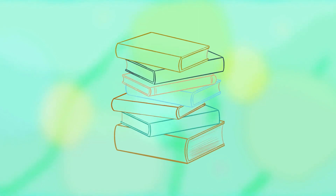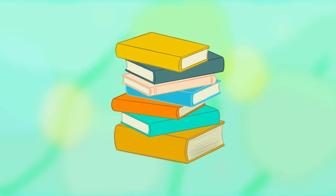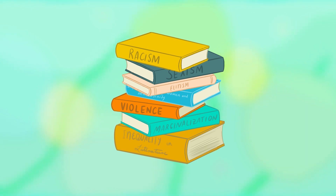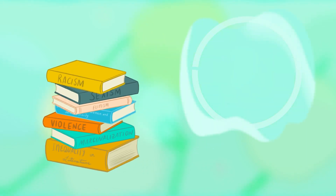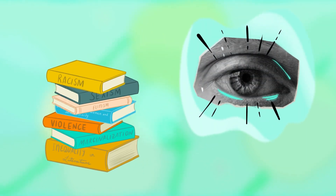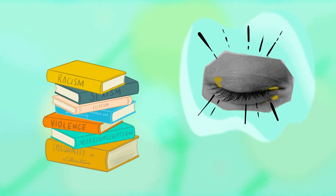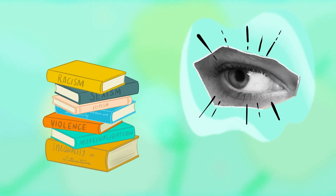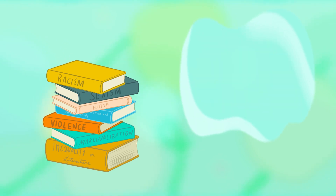Finally, in Unit 3, we'll analyze themes such as racism, sexism, elitism, representation of women and masculinity, and violence, marginalization, and inequality in literature. The stories we tell ourselves can hide some dark truths, can they?